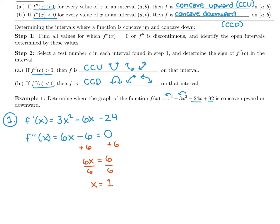Remember, we didn't set the first derivative equal to zero, so this is not a critical number. Critical numbers are in first derivative world with increasing, decreasing, and relative extrema. In second derivative world, we'll call this value something different. Now we put x = 1 on our sign chart and plug into the second derivative. To know concave up and concave down, you plug into the second derivative — never the original function — on the sign chart.